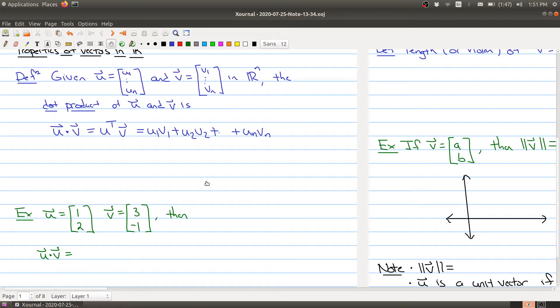Here I have a simple example. I have a vector (1, 2) and the vector (3, -1), and I want to do the dot product of these two vectors. So I have 1 times 3 plus 2 times negative 1, so I get my answer being 1.